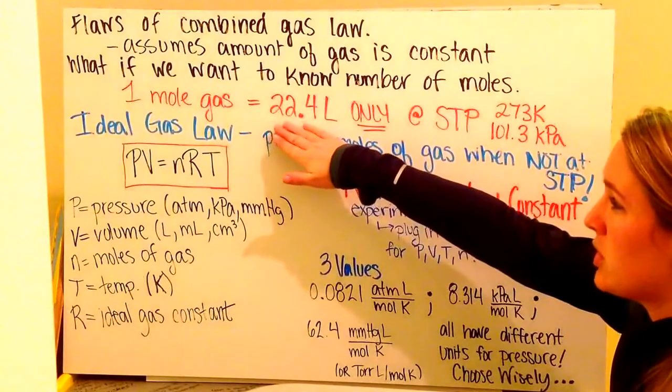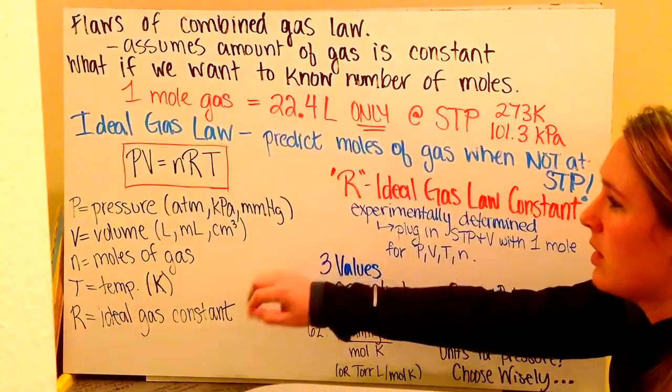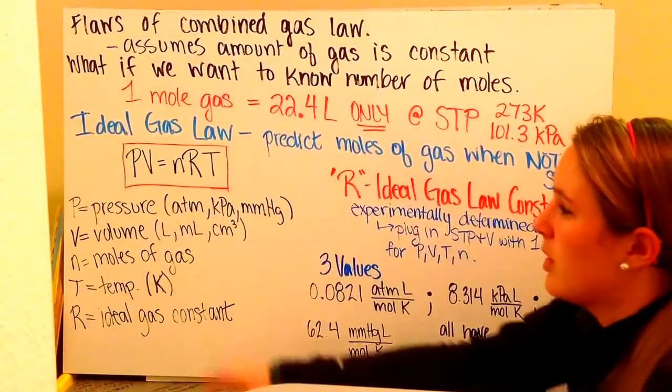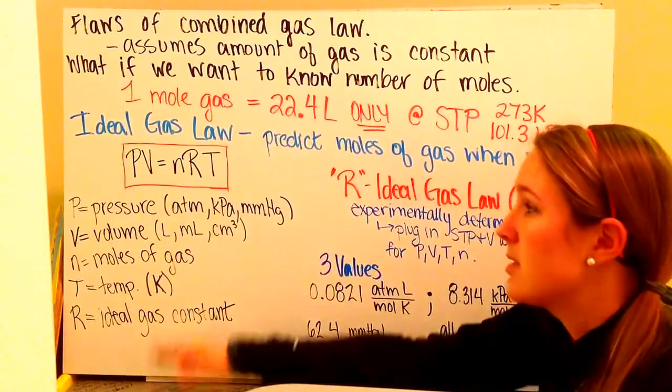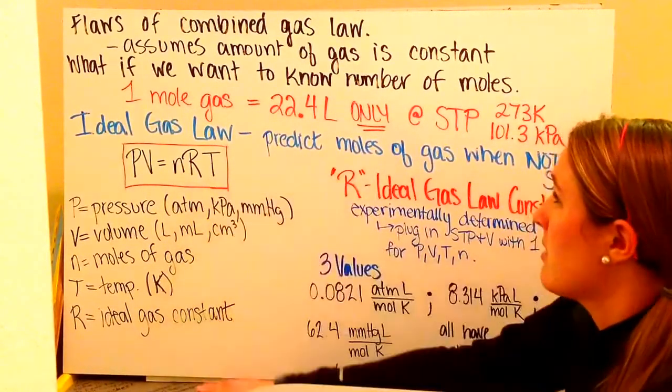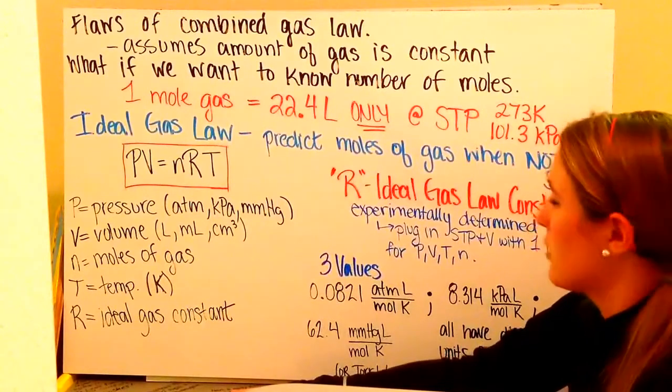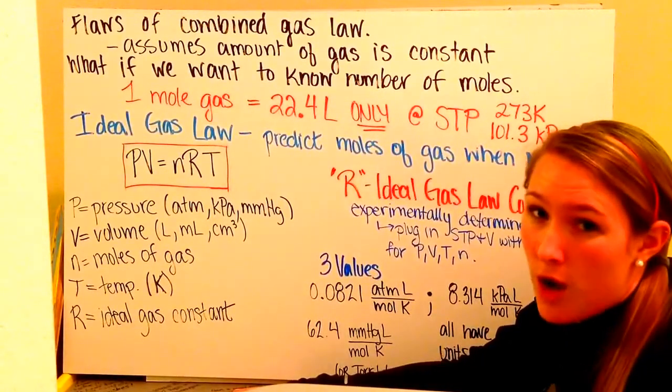Now that everybody has their own pressure, we're going to continue on, each person solving for their gas law constant. So, like I said, each person is going to use 22.4 liters. You've picked your pressure. You're going to put 1 in for our moles of gas, and you're going to put in 273 Kelvin for your temperature. Take a moment to solve for R.